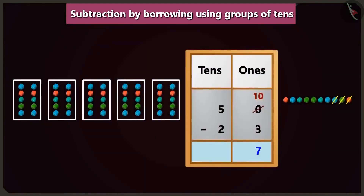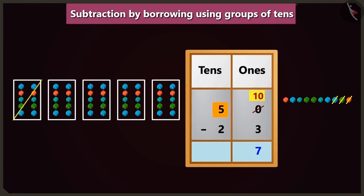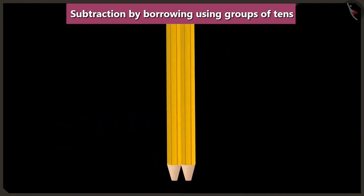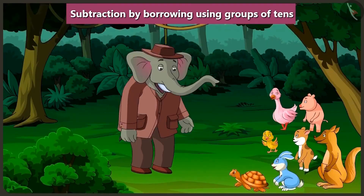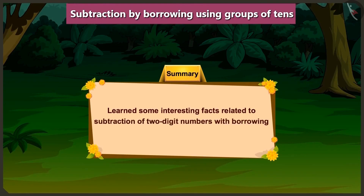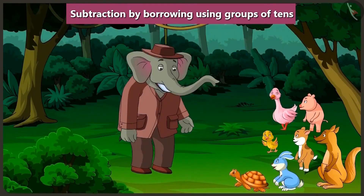So after subtracting 23 jellies from 50 jellies you will be left with 27 jellies. In subtraction, whenever we borrow a ten from a digit, we must reduce that digit by a ten. Today we have learned some interesting facts related to subtraction of two-digit numbers with borrowing. In the next video we will understand how both subtraction and addition are useful.